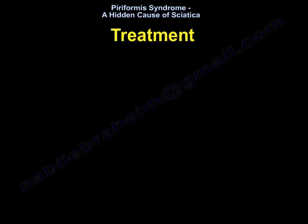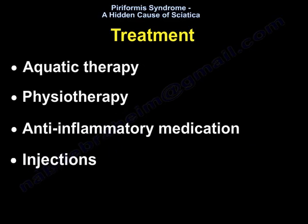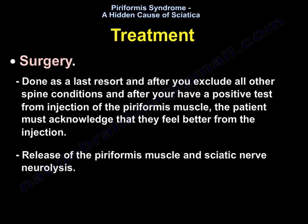Treatment includes aquatic therapy, physiotherapy, anti-inflammatory medications, and injections performed under ultrasound or fluoroscopy. Make sure the patient has someone to drive them home, because the sciatic nerve may become affected by the numbing medicine. Surgery is a last resort, done after excluding all other possible spine conditions and after a positive response to injection of the piriformis muscle — the patient must acknowledge feeling better from the injection. Surgical options include release of the piriformis muscle and sciatic nerve neurolysis.